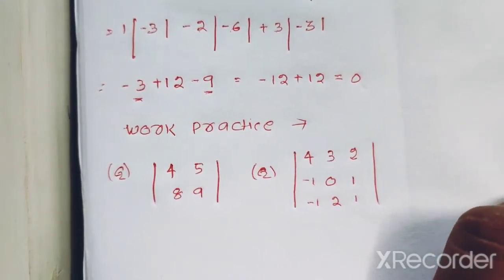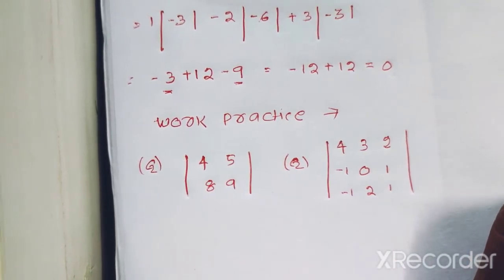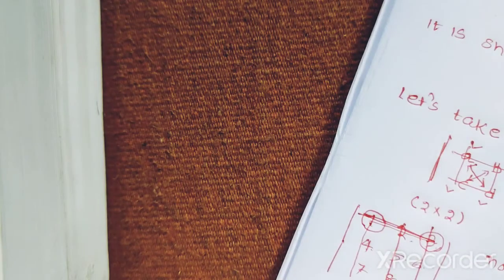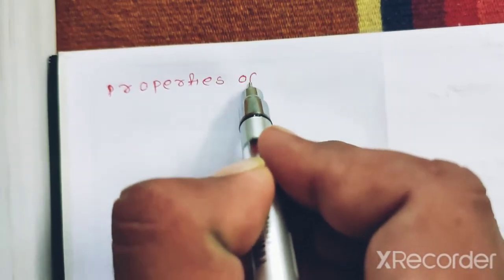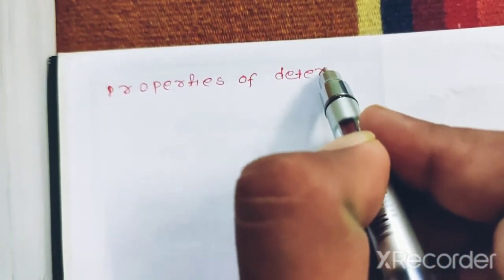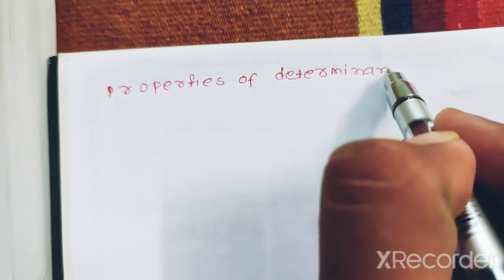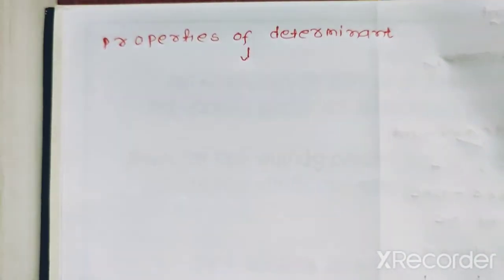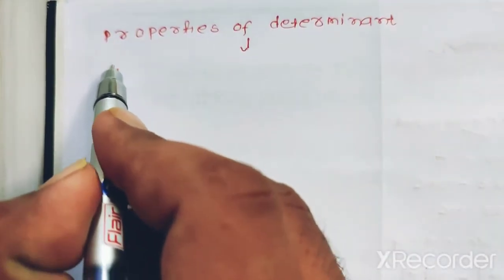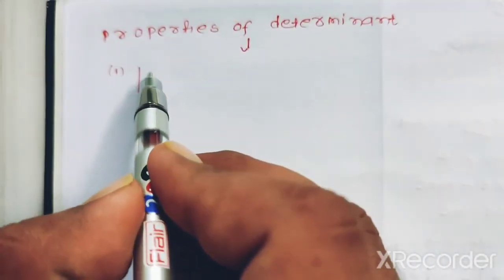Now we will learn the basic properties of the determinant. This is the property of the determinant. Property number one is as follows.